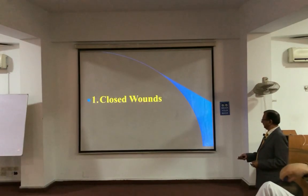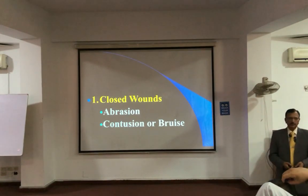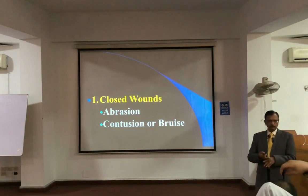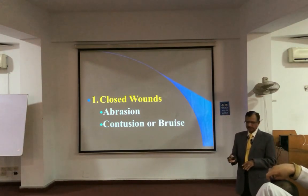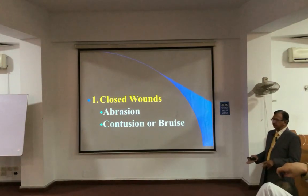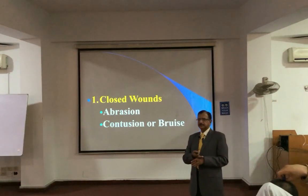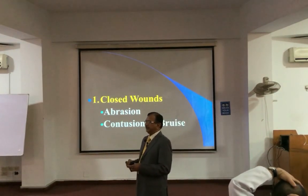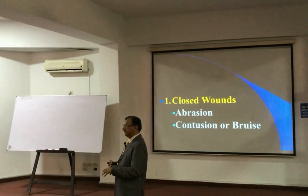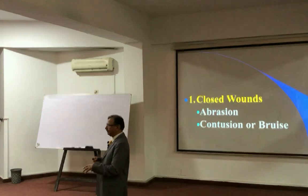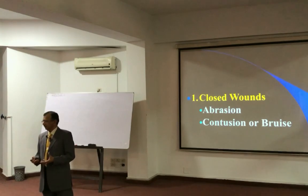So the closed wounds — they are abrasions and contusions. Abrasions are the damage to the most superficial layers of the skin. Contusions, or bruises, are the damage to the subcutaneous structures by the application of blunt force. It crushes the tissues and there is extravasation of blood in subcutaneous spaces, and it appears as a bruise or contusion.